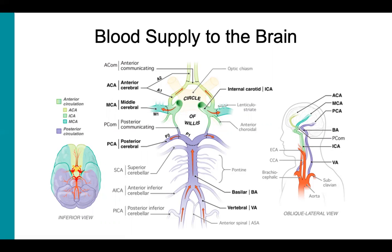The entire blood supply to the brain depends on two sets of branches from the aorta: the internal carotid arteries and the vertebral arteries. We divide blood supply to the brain into anterior circulation, supplied by the internal carotid arteries, and posterior circulation, supplied by the vertebral arteries.